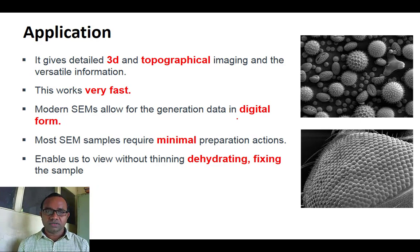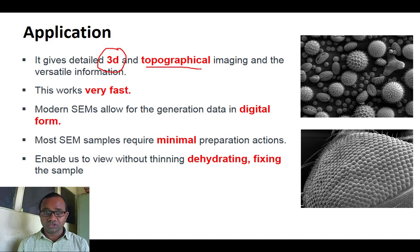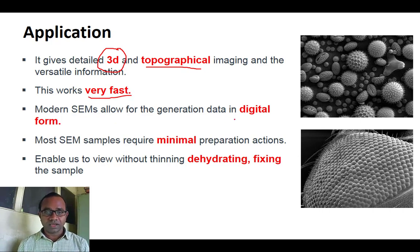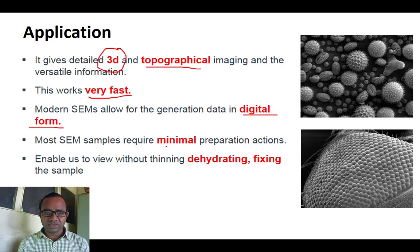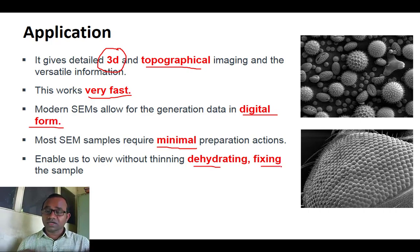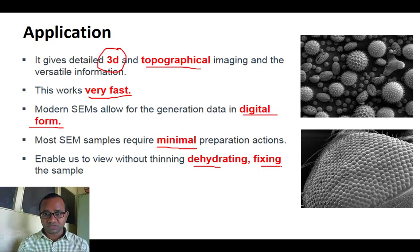The applications and advantages of the scanning electron microscope include: it gives three-dimensional pictures of an object and topography, meaning the surface image can also be produced. The working is very fast, and data can be stored in digital form since the image appears on a computer monitor. Minimal preparation is required for the sample — steps like dehydration and fixing of the sample, which are required in transmission electron microscopy, can be skipped, and the sample can be used more directly.